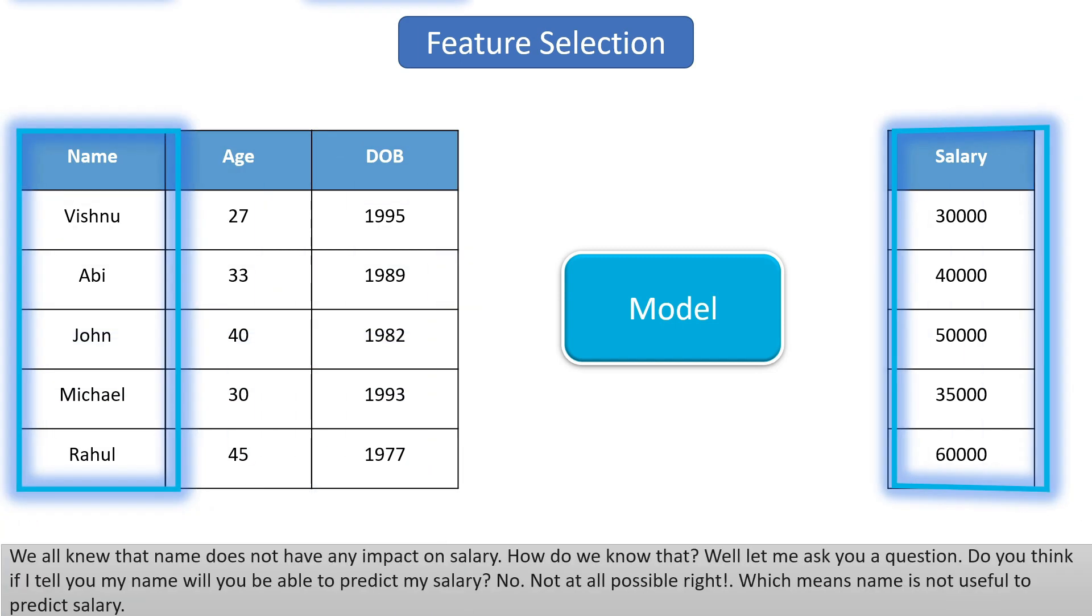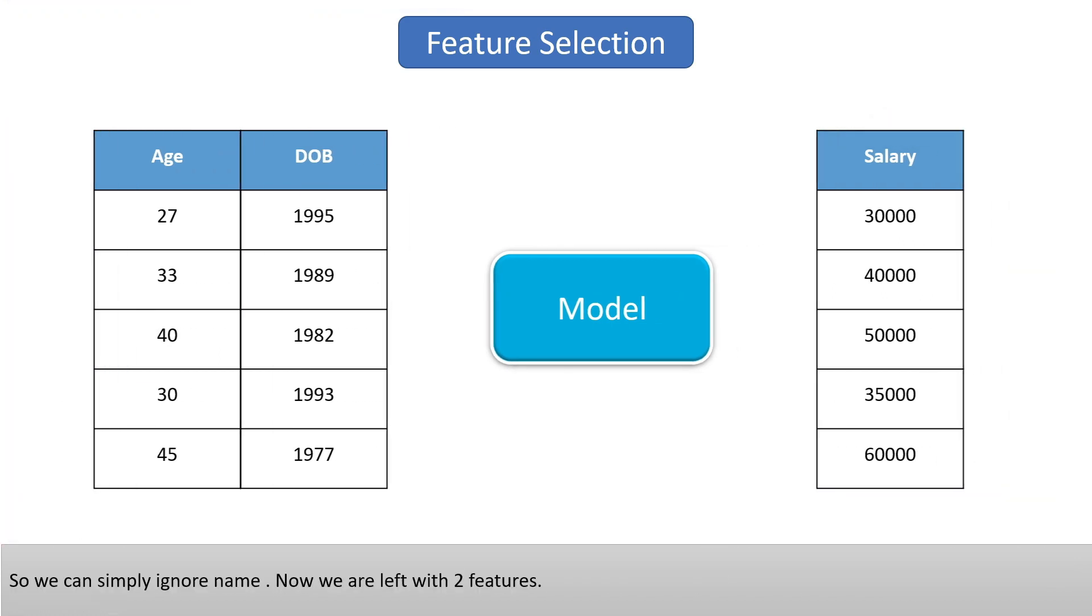For example, we know that name doesn't have any impact on salary. How do we know that? Well, let me ask you a question. Do you think if I tell you my name, you'll be able to predict my salary? No, not at all possible, right? Which means name is not useful to predict salary. So we can simply ignore name.